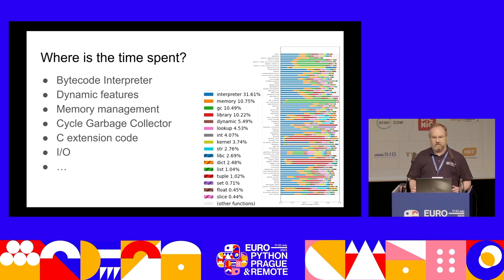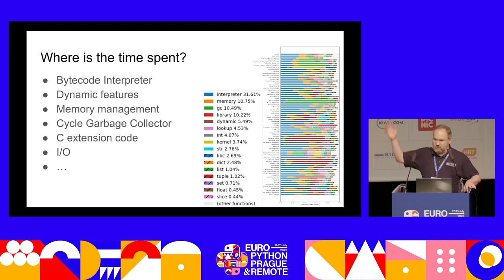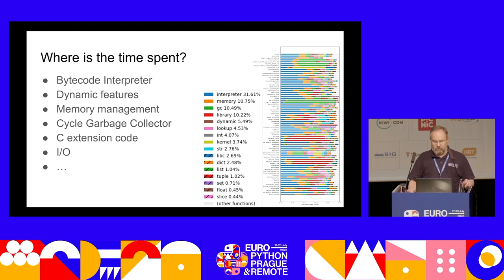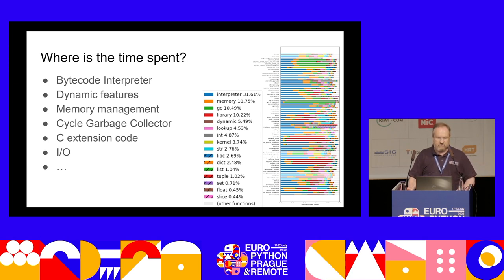We need to consider all aspects of the thing — do some profiling and find out where time is spent. These are benchmarks from our standard benchmark suites, broken down into various aspects of where time is spent. The interpreter itself is a surprisingly small fraction — something like a third in 3.11. Memory management is about 10%, the cycle GC is another 10%, and then there's library code, dynamic lookups, and other pieces.